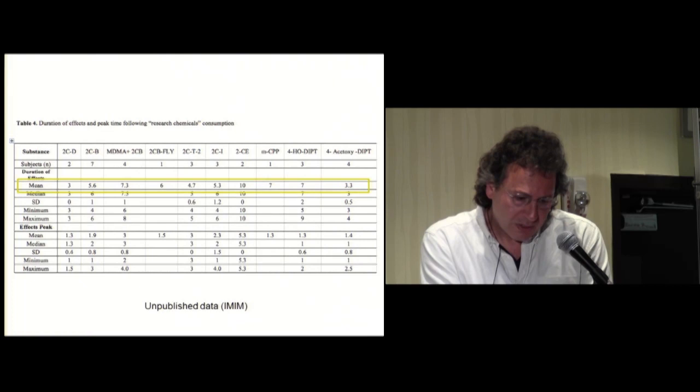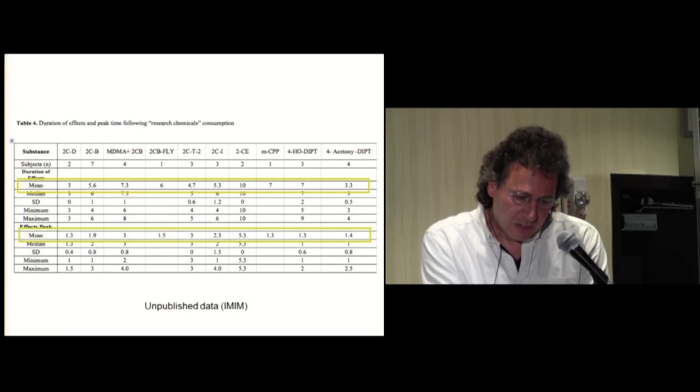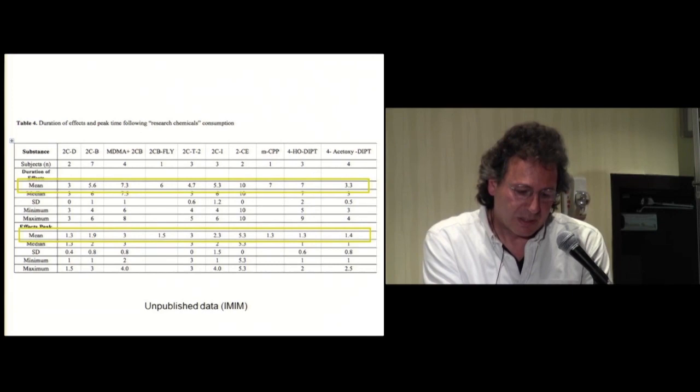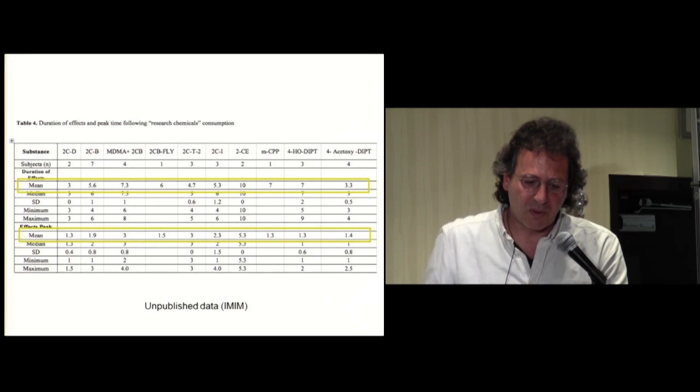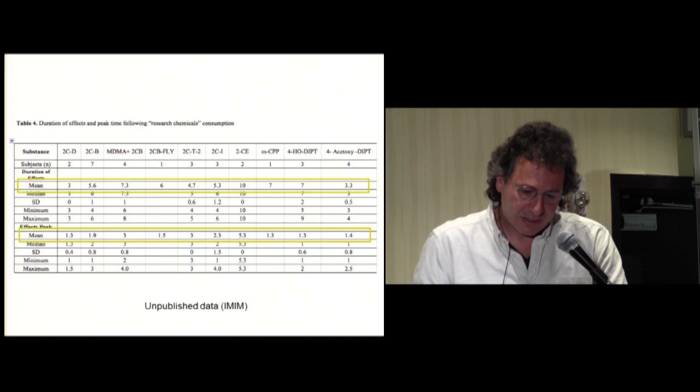Regarding duration effects, 2C-E was the longest, has the longest duration. The peak effects for 2CB reach at almost two hours, and they are quite similar, except 2C-E, that is the drug with longer effect, that reaches the peak effect at five hours, more or less.